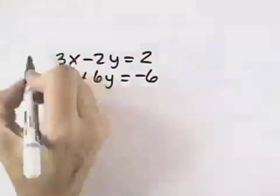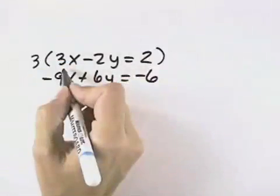If I choose to get rid of x, I'm going to multiply my top equation by 3, so the coefficient in front of x will be a 9.